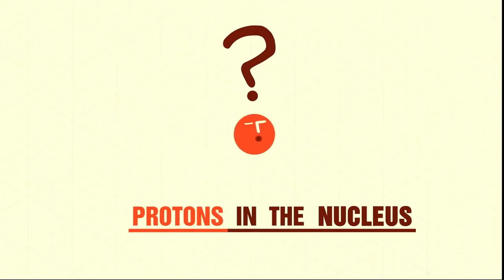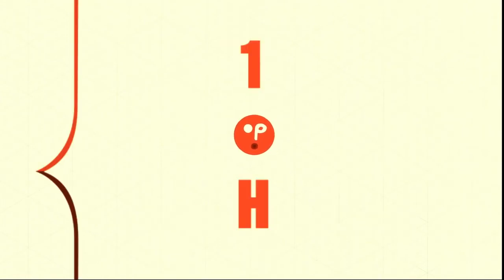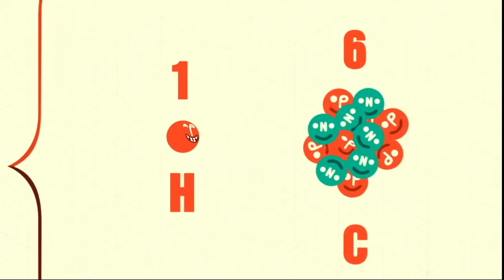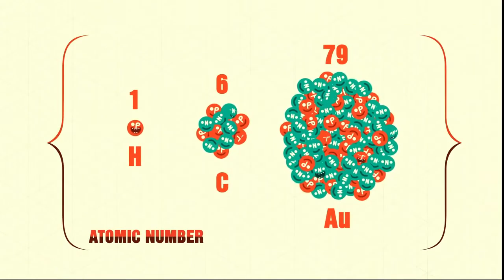The identity of an atom is determined only by the number of protons in its nucleus. Hydrogen is hydrogen because it has just one proton. Carbon is carbon because it has six. Gold is gold because it has 79, and so on.